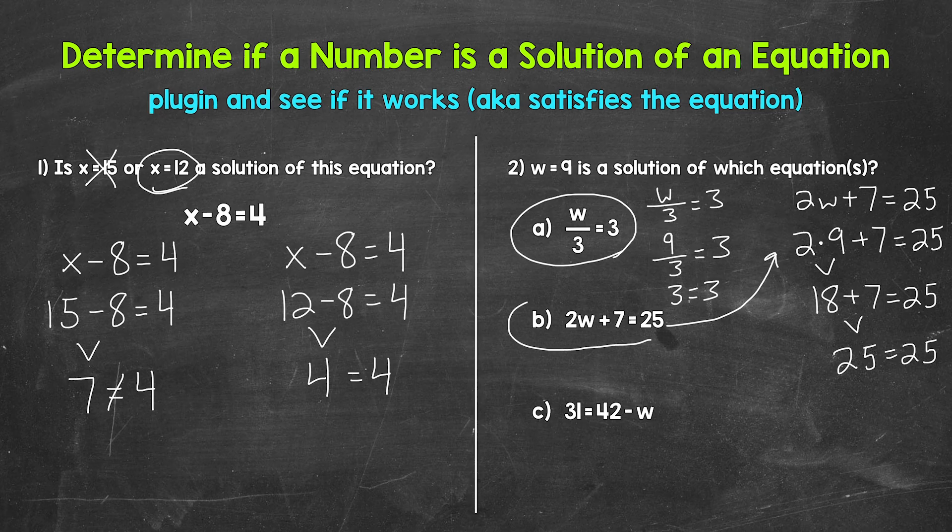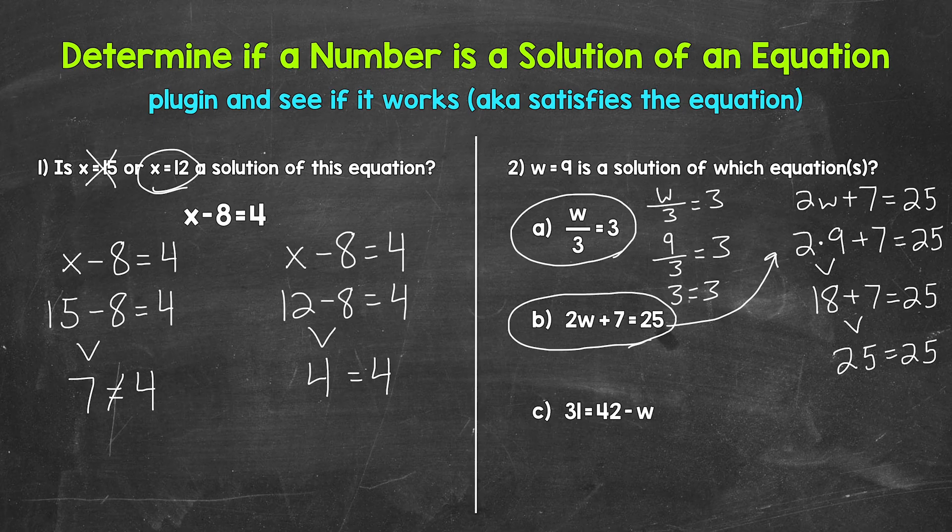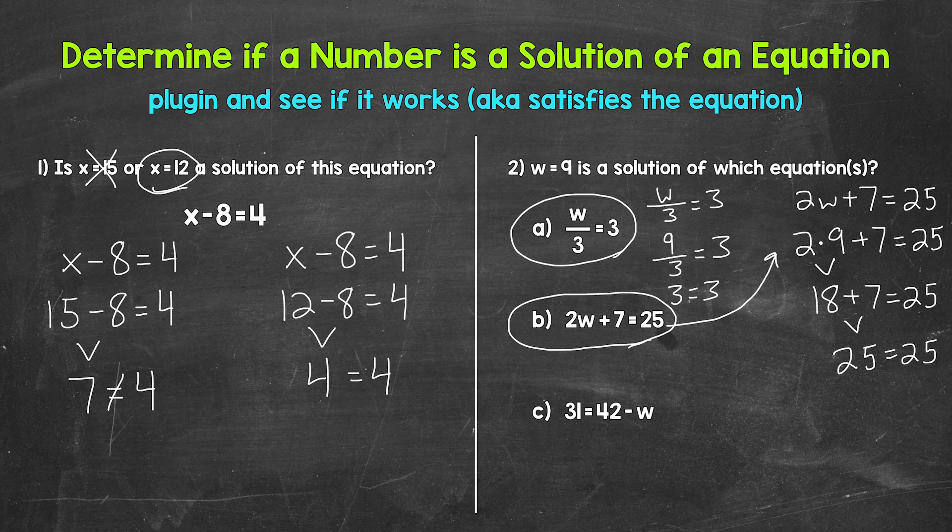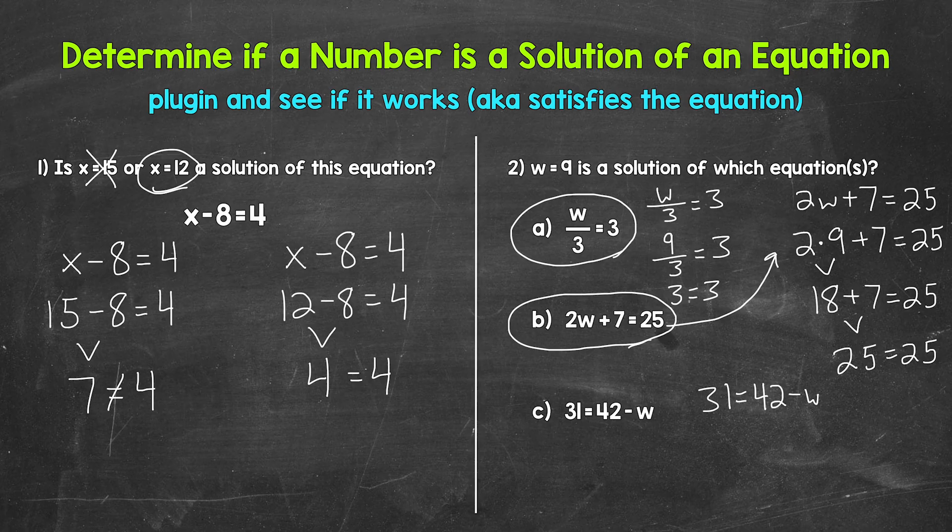Lastly, let's try choice C. So we have 31 equals 42 minus w. So let's come to the side here. 31 equals 42 minus w. Let's plug in nine.